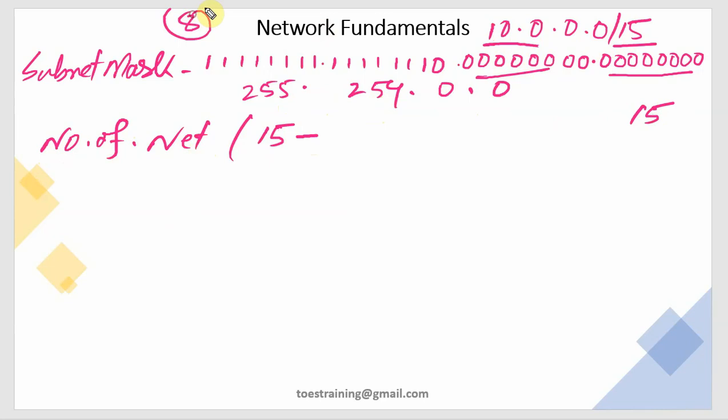Class A's default network bit is 8. So prefix 15 minus default network 8 equals 7 bits. 2 to the power of 7 equals 128 networks.